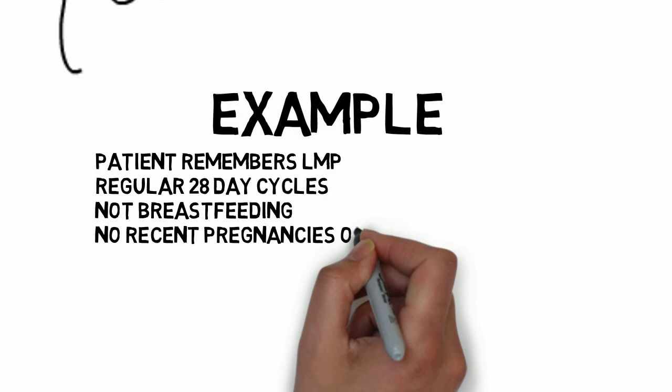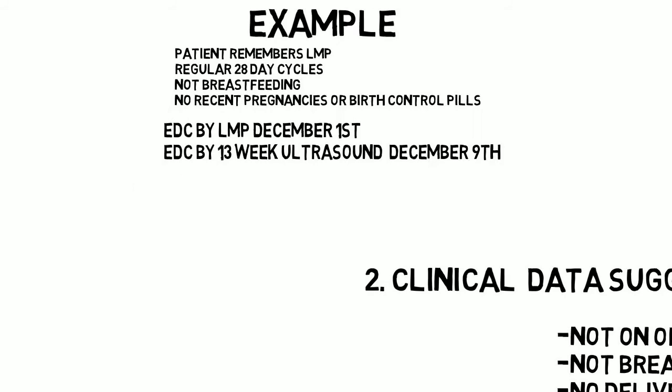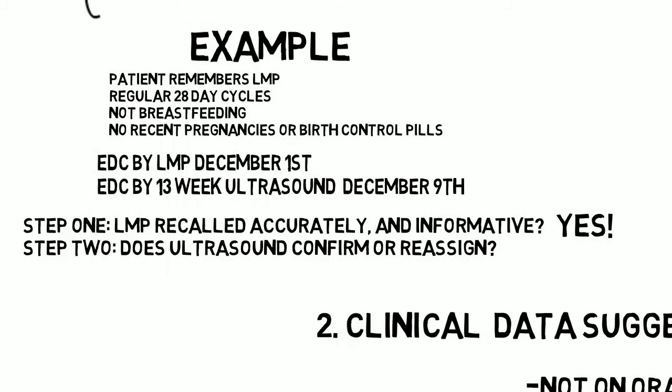Here's an example. Patient remembers her LMP has regular 28-day cycles and gets an EDC of December 1st. Ultrasound at 13 weeks suggests EDC of December 9th. There is a difference of 8 days and 13 weeks. More than 7 days at 13 weeks means change to December 9th.